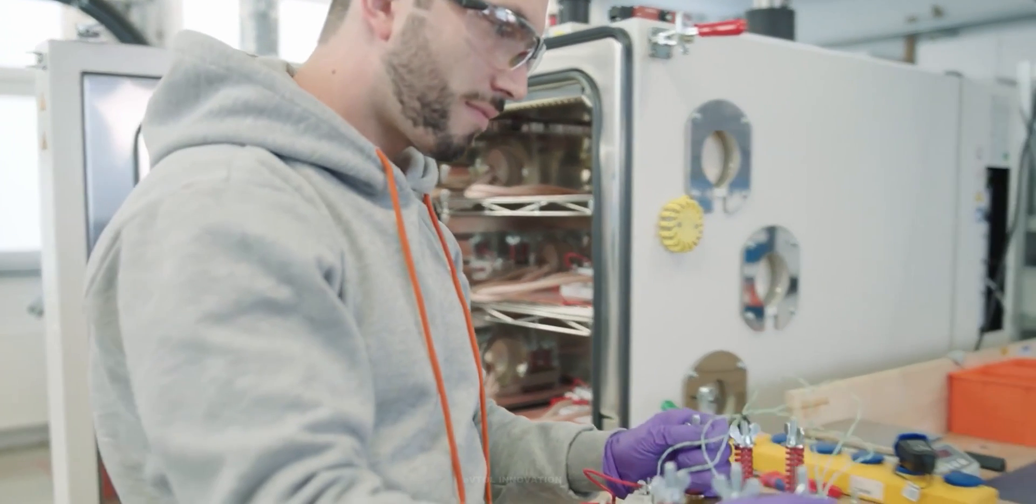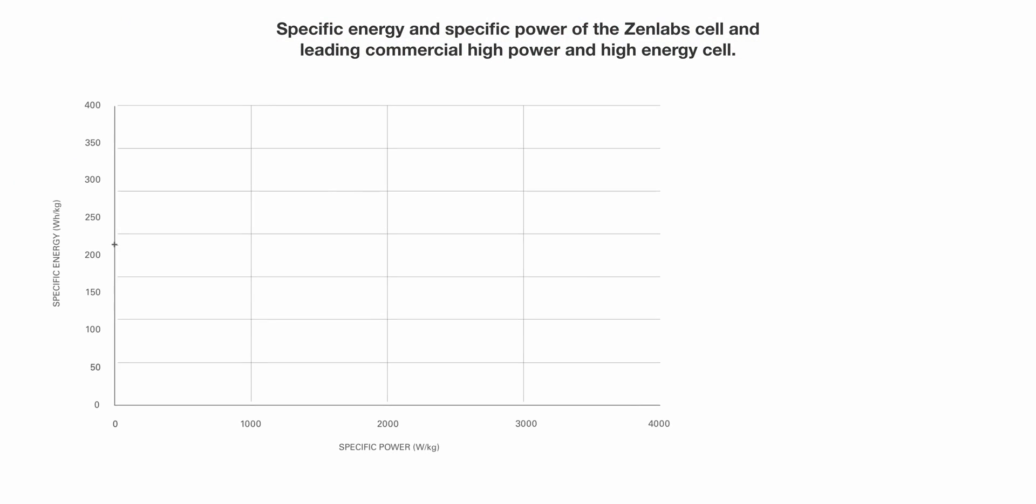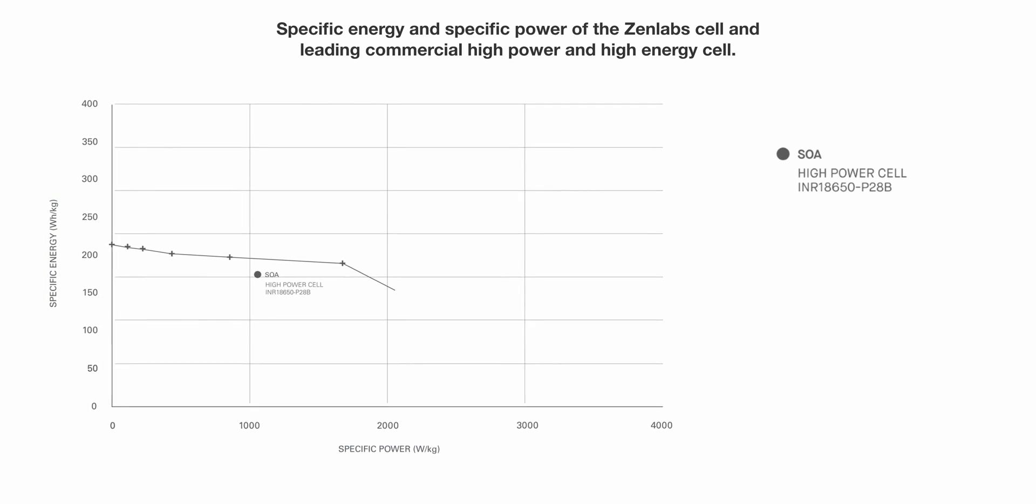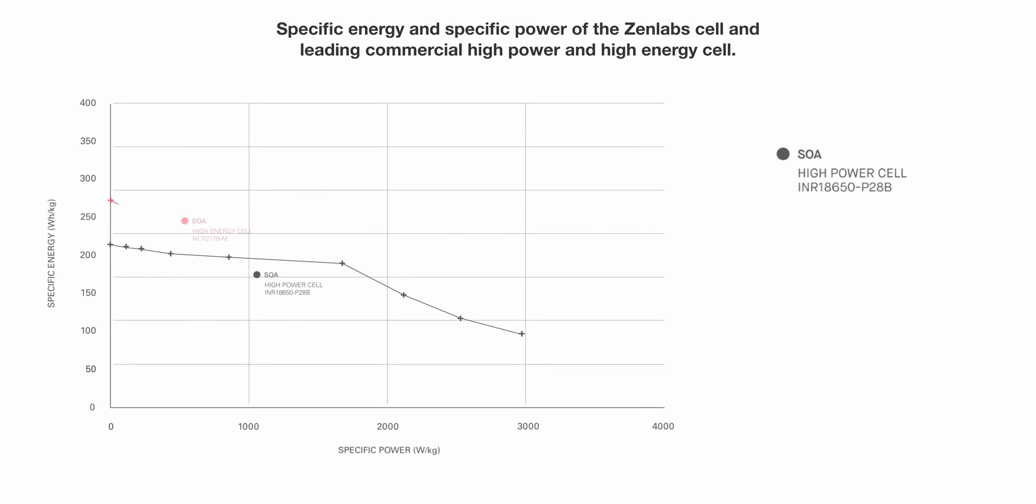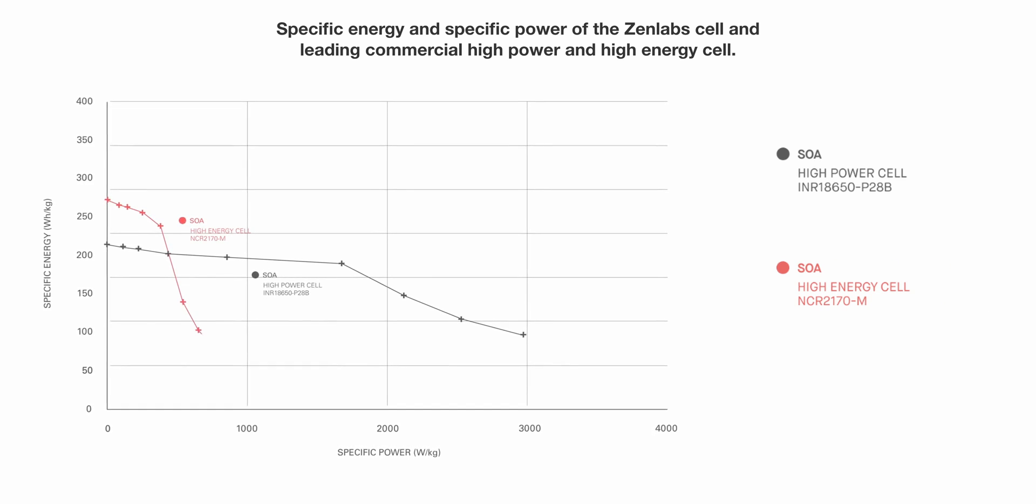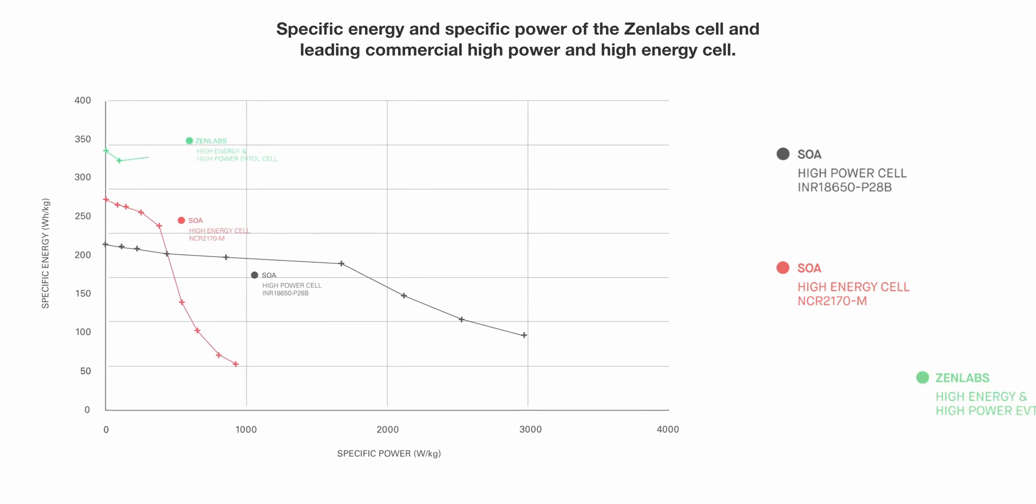Generally, lithium-ion cells have been able to achieve either high specific power or high specific energy, but not both. A commercially available, state-of-the-art, high-power cell is shown in black. A commercially available, high-energy cell is shown in red. And Lilium's choice, the Zenlabs cell is shown in green.